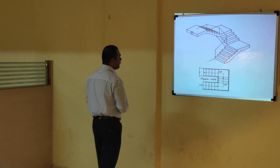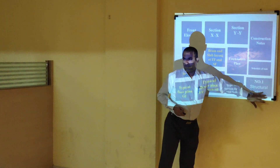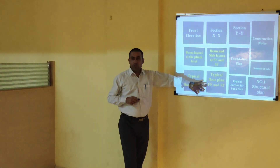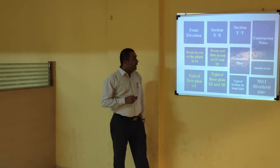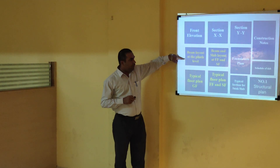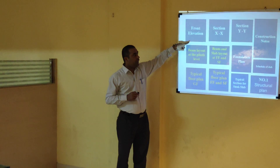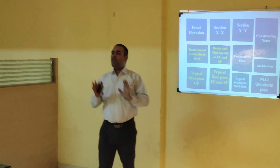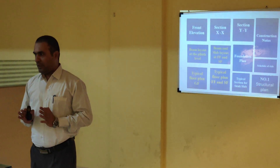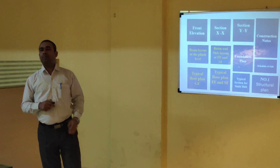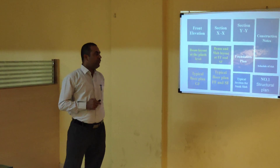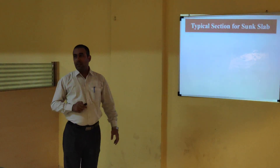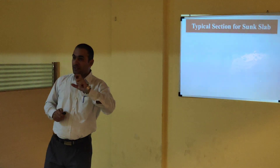The first sheet is the structural plan. It should consist of the typical floor plan of the ground floor, first floor, and second floor; the beam layout at plinth level, floor level, and slab level; elevation; section along XX and section along YY; foundation plan; construction notes; and schedule of slabs. Knowing what to draw, I think you can very easily prepare that sheet.